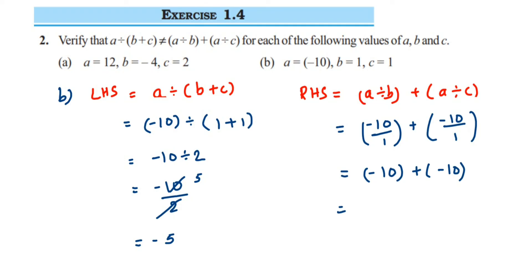So 10+10 is 20, and put the minus sign. So you can see that LHS is -5, RHS is -20. They are not equal, so LHS is not equal to RHS, and this is verified.